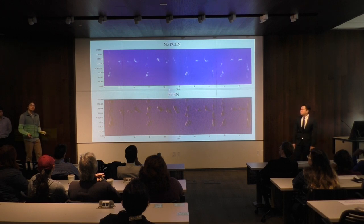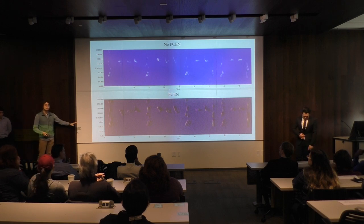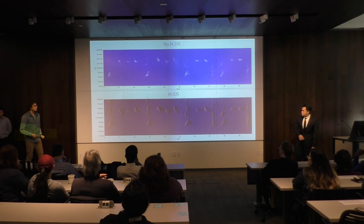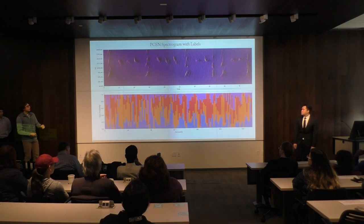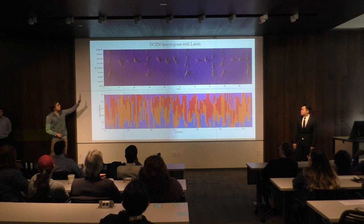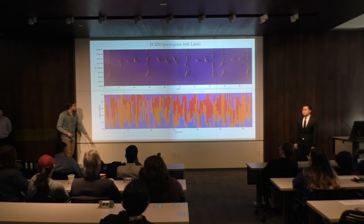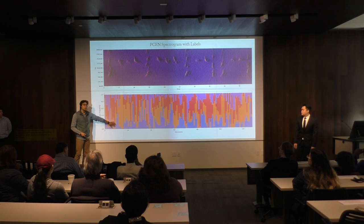Now that we better understand spectrograms, we can talk about how an unsupervised machine learning algorithm takes these images and performs classification. The algorithm takes a spectrogram as input and scans slowly across the entire image, looking for consistent patterns. Every time a remarkable pattern is identified, it labels it one of the colors on this stacked bar block.